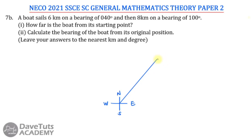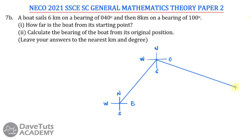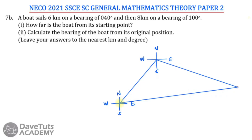From this new position, the boat also moves 8 km on a bearing of 100 degrees. We again consider our cardinal points — north, south, east, and west — and draw the movement at 100 degrees, which is just a bit more than 90 degrees (east). Since it is 8 km, this segment should be longer than the 6 km we drew, completing our diagram.